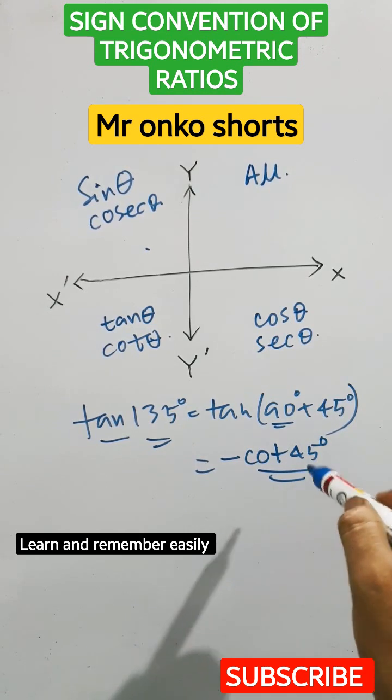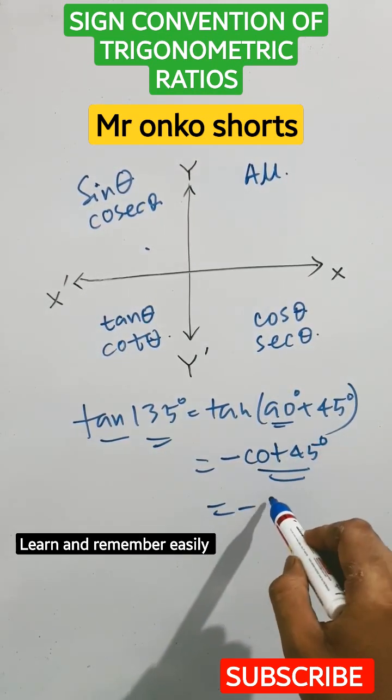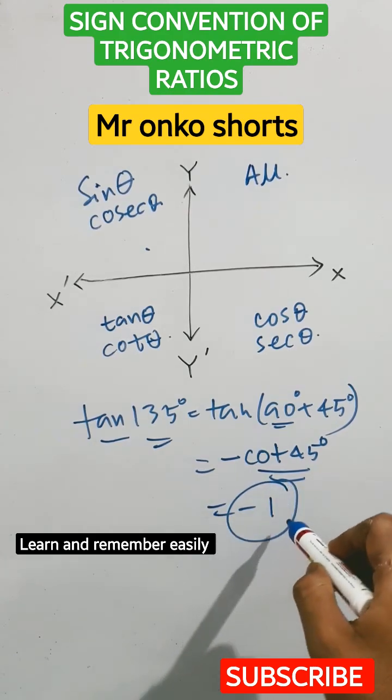The sign will be negative since tan is negative in the second quadrant. So, that is the way you can solve it using sign convention and then you can find the value, that is minus 1.